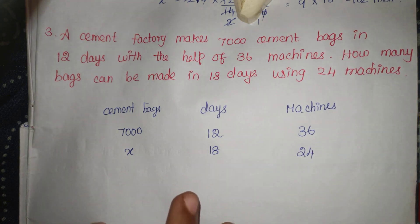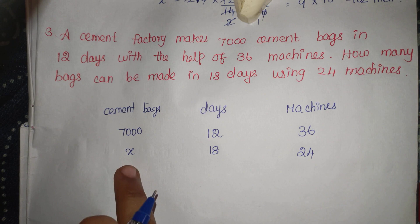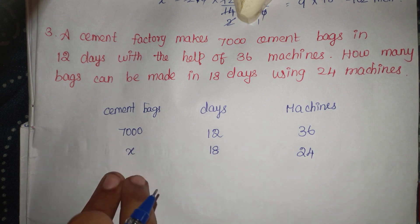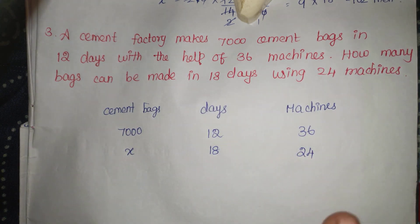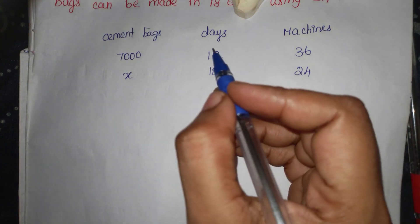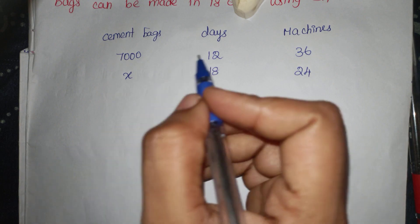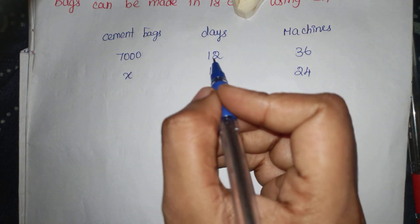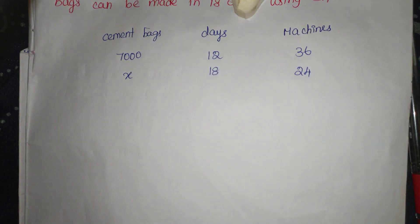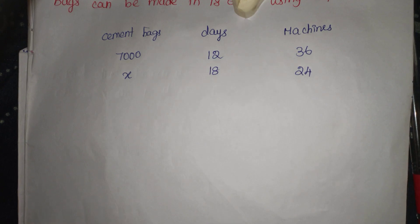So the first one — we will compare it to X. We will compare it to the day. The number of days is 12 days. We have to make it to do 7000 bags.